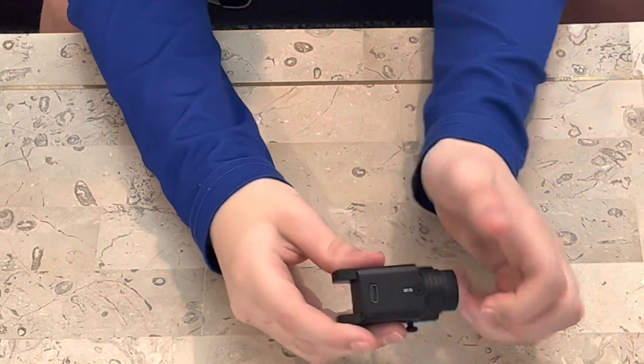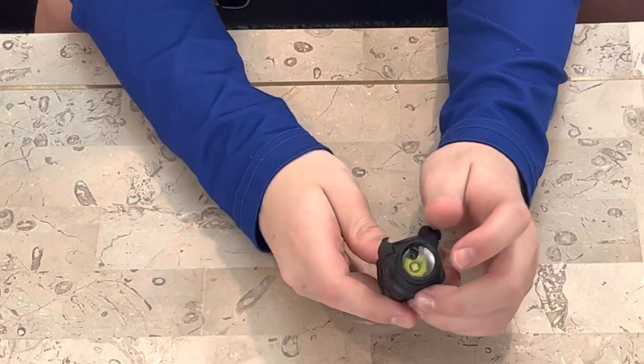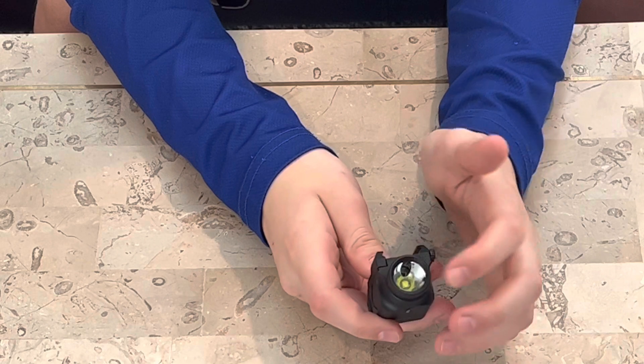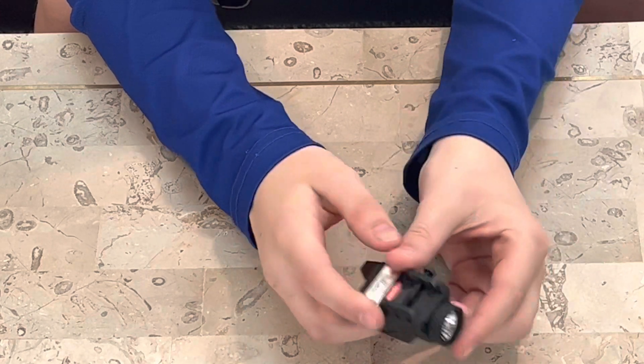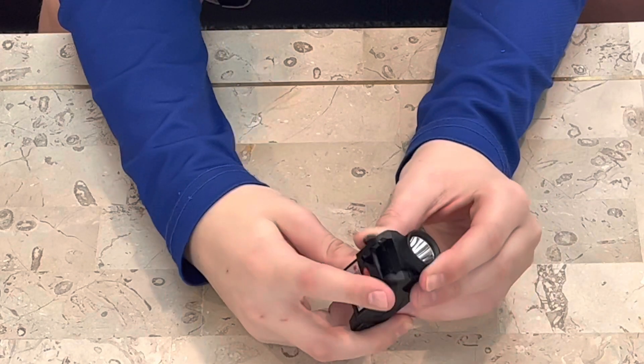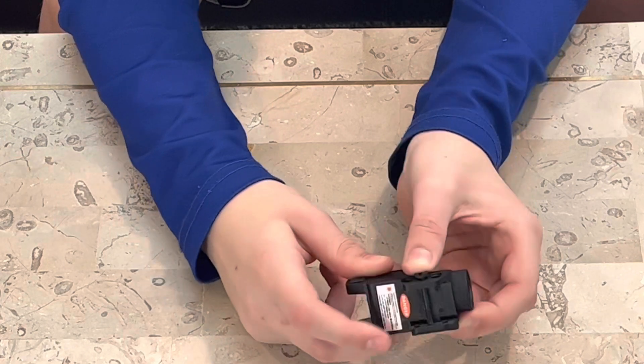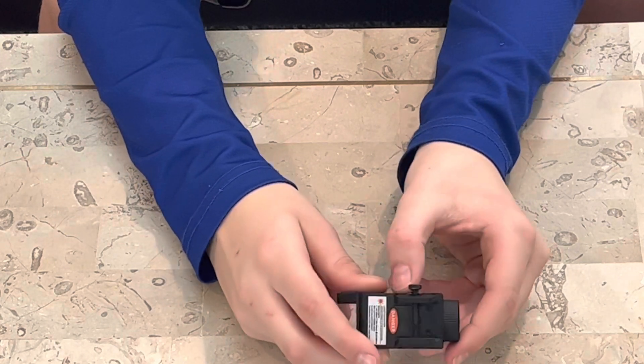And then here's the USB plug. Let's plug that in. Flashlight right here. Laser is right above that, if you can see that. And then there's like a little plastic thing right here that can actually come off, but you don't really need it to come off.